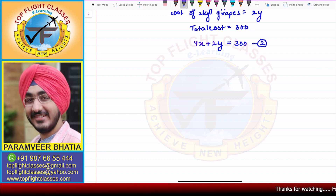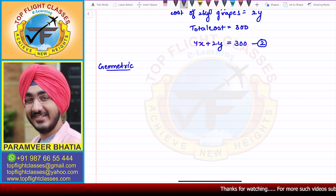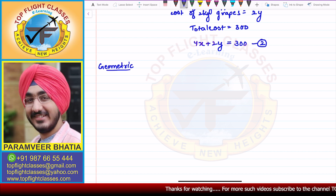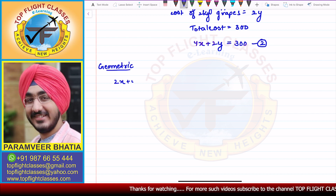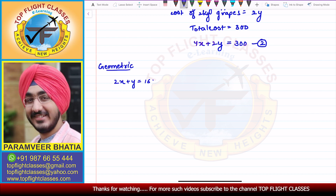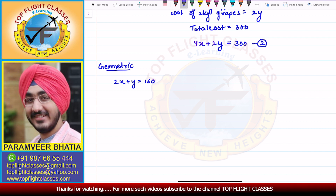Now if we want to solve it geometrically, we have two equations: the first is 2x plus y equals 160, and the second is 4x plus 2y equals 300.